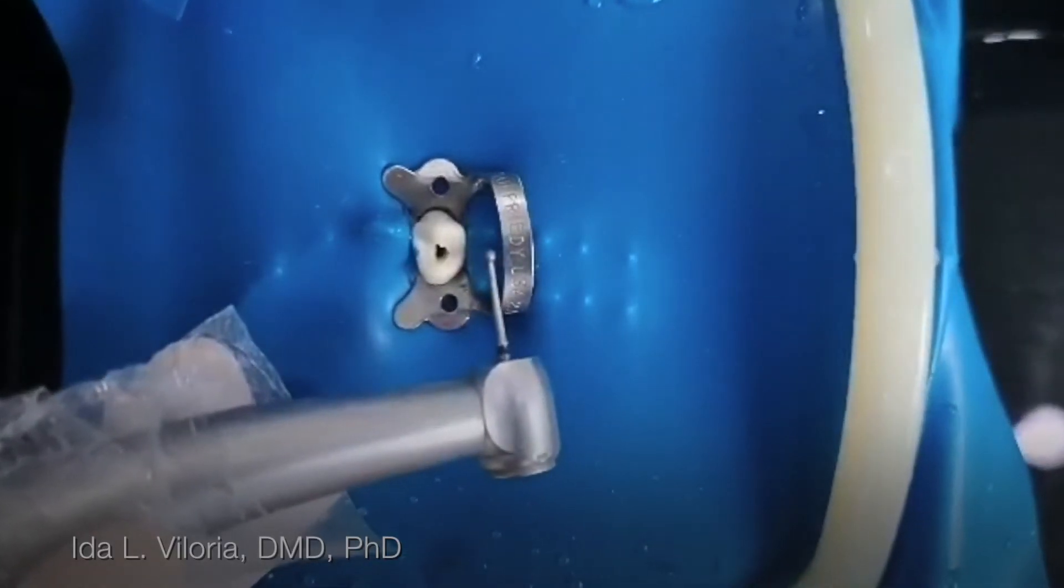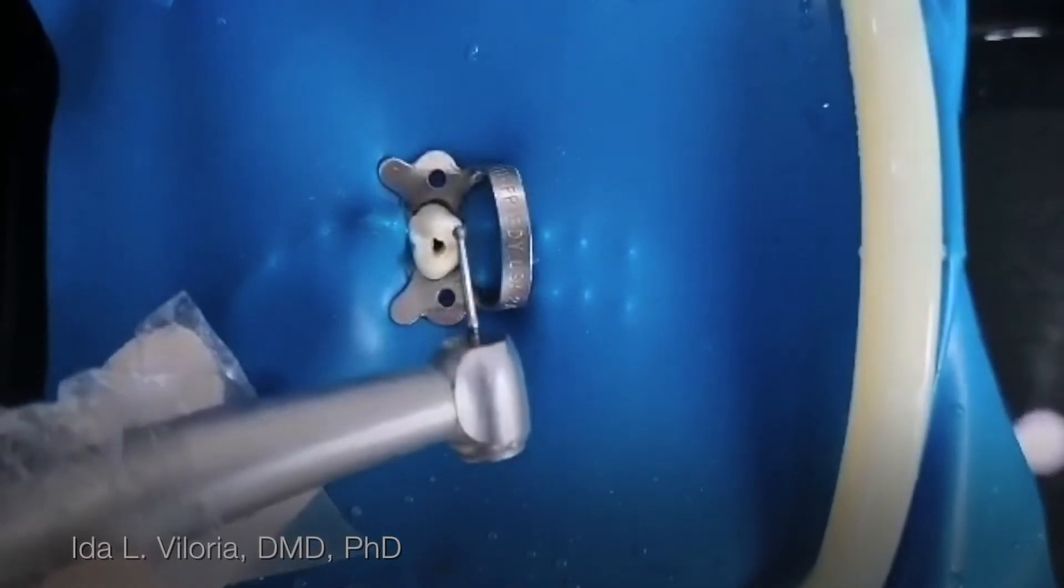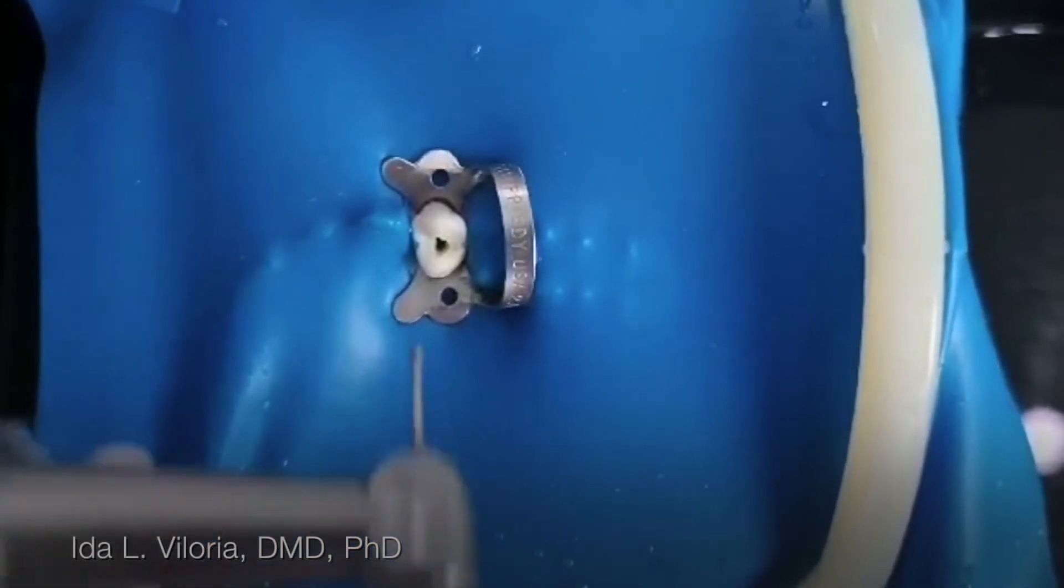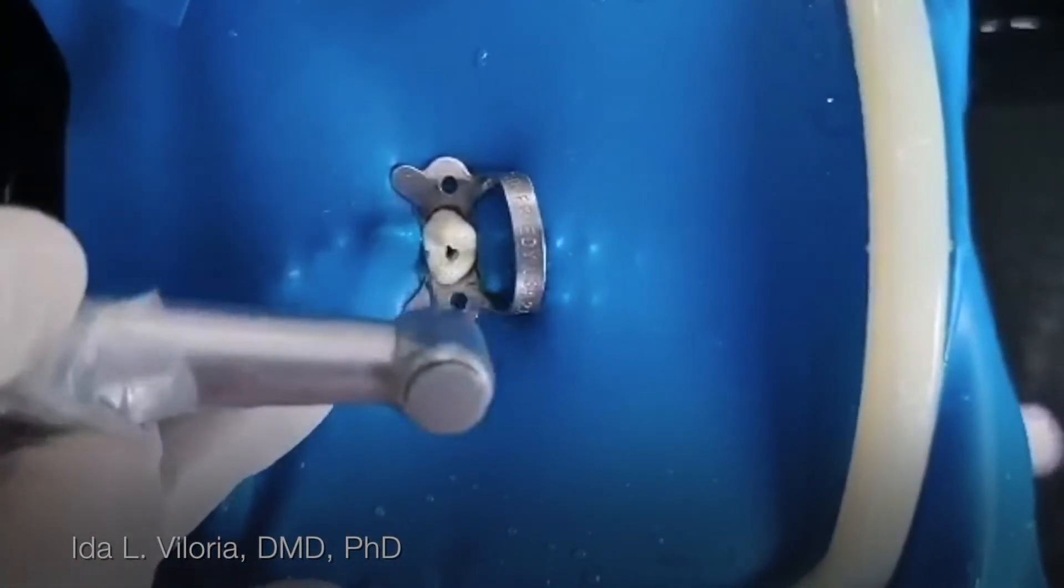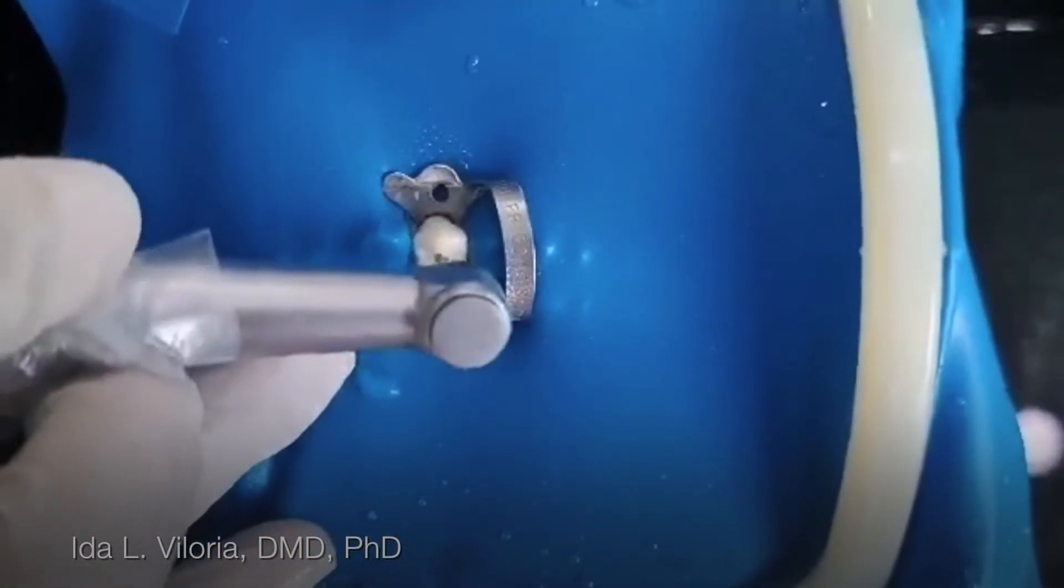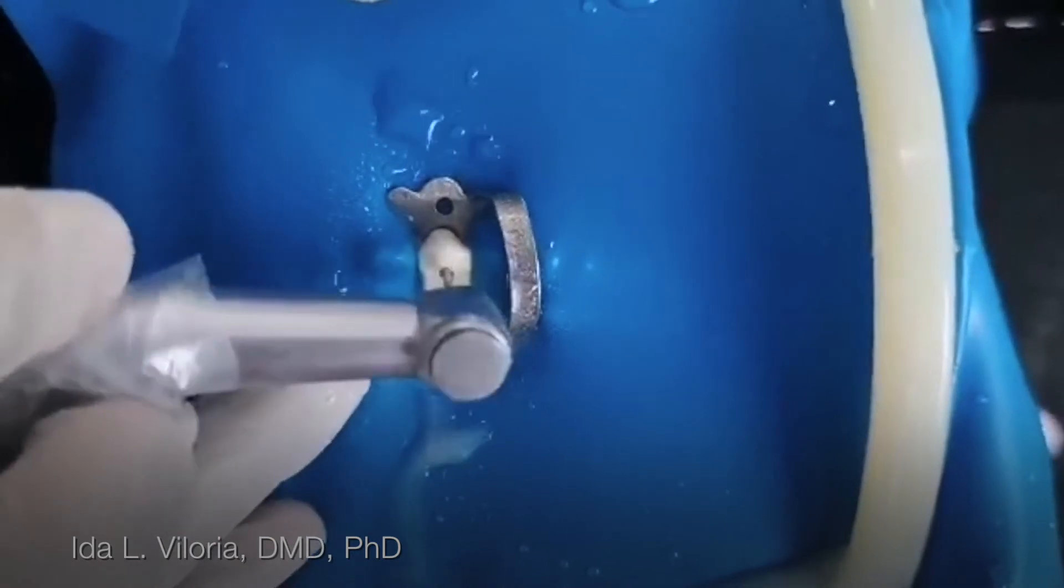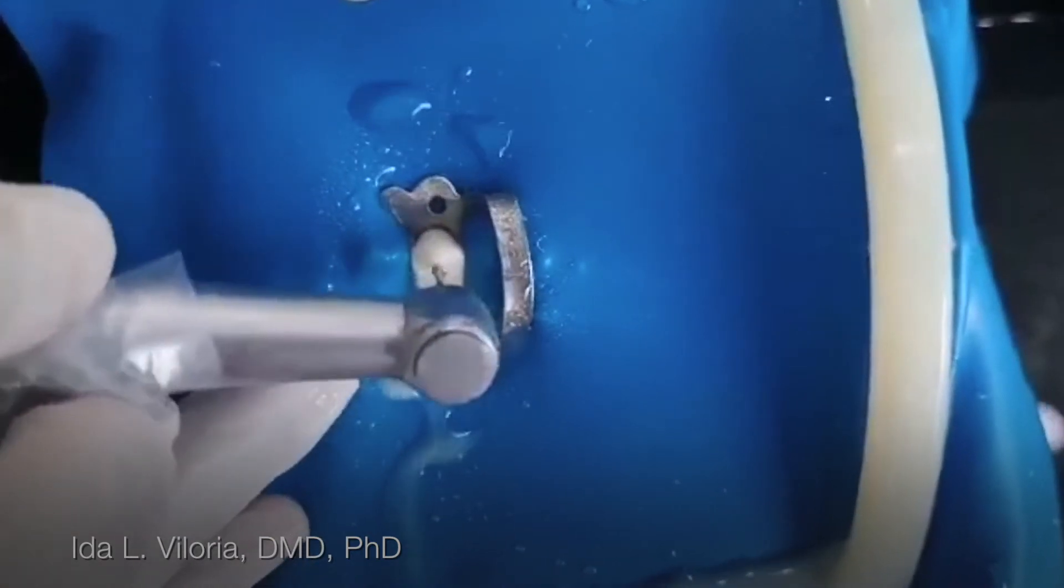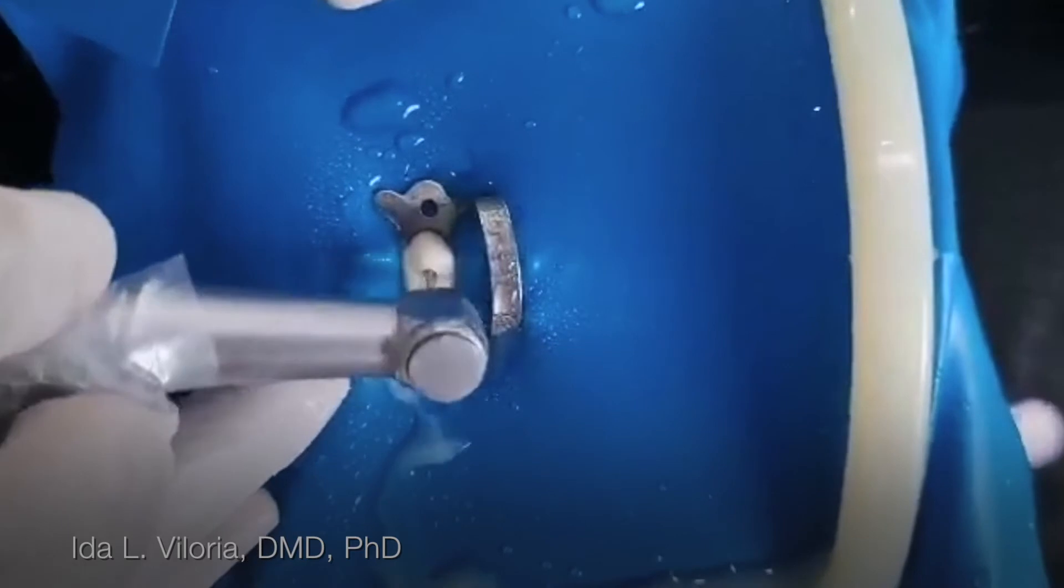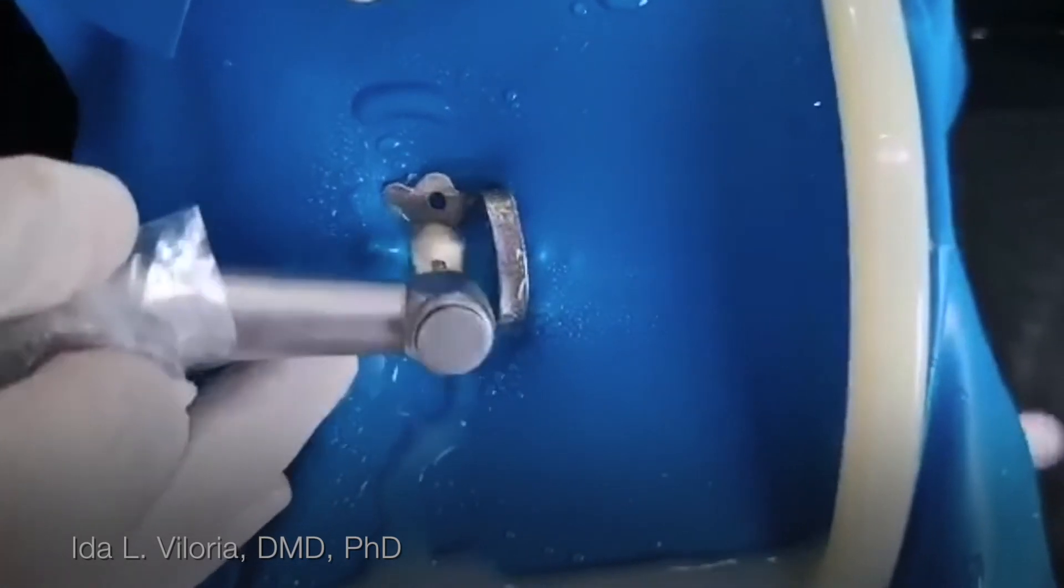I still have to continue, but I have changed my roundburn long chunk into a bigger one because it can now get in. So I'll start. I'm now removing the roof of the pulp chamber towards the buckle, then towards the palatal.